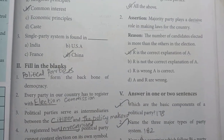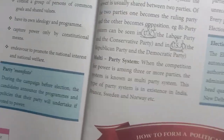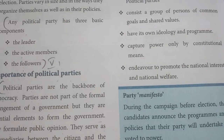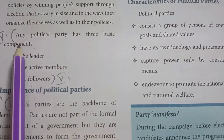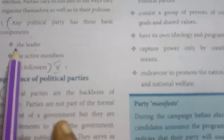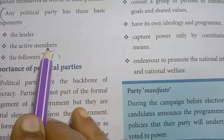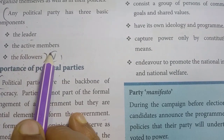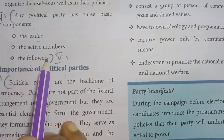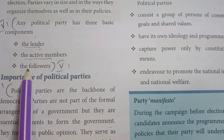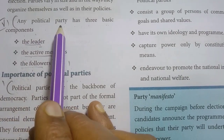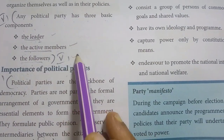Page number 178: any political party has three basic components. The basic components are: the leader, the active members, and the followers. This is the answer for the first question.